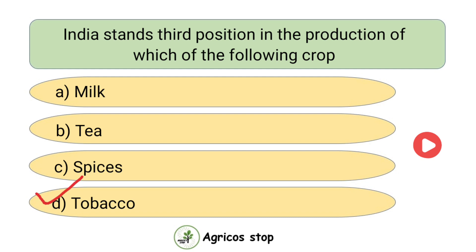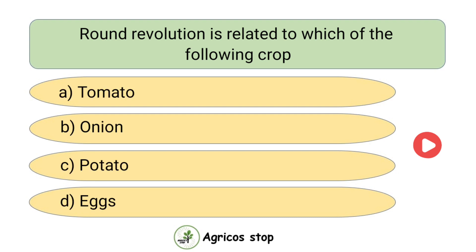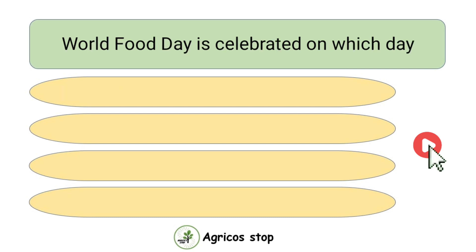India stands third in the production of tobacco. Round Revolution is related to which of the following crop? Options are Tomato, Onion, Potato, and Eggs. The answer is Potato. Round Revolution is related to Potato.